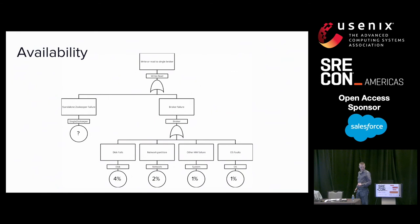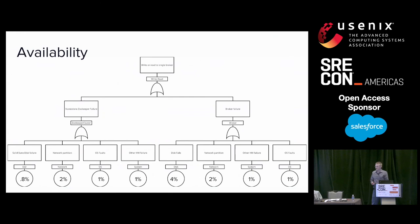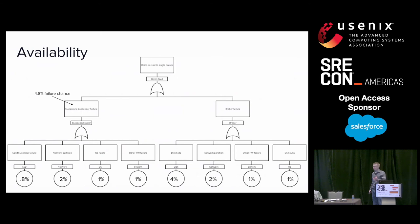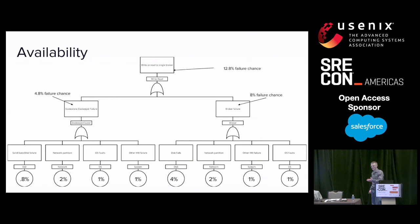Next, we need to determine the failure rate of zookeeper. Generally speaking, you run zookeepers on solid state disks — at least that's the recommendation. It also runs on hardware, which is going to be susceptible to network partitions, OS faults, and hardware failure. When we crunch the numbers out, we get a 4.8% chance of zookeeper failure, 8% chance of failure on our single broker, with an overall 12.8% chance of failure if we're using a single broker. Not very good for production.